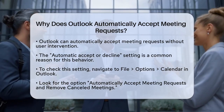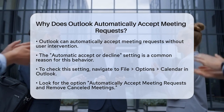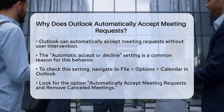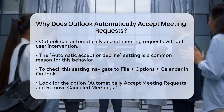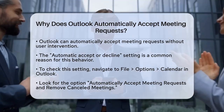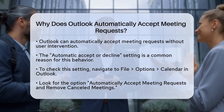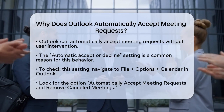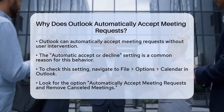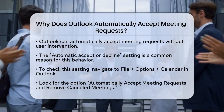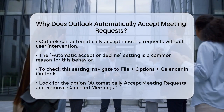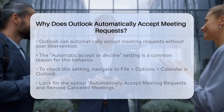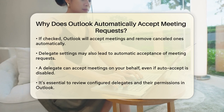Outlook can automatically accept meeting requests due to several settings and configurations. One common reason is the automatic accept or decline setting in Outlook. To check this, go to File, Options, Calendar and look for the automatic accept or decline section. Here, you might find the option to automatically accept meeting requests and remove cancelled meetings checked. If this is the case, Outlook will accept meeting requests and remove any cancelled meetings automatically.